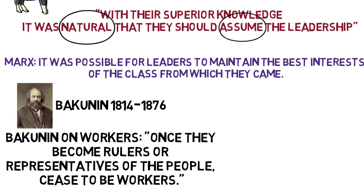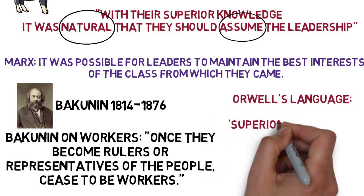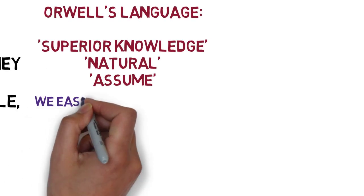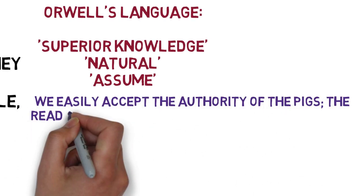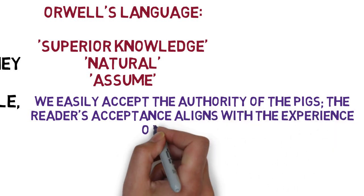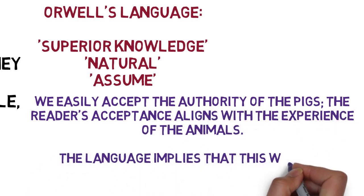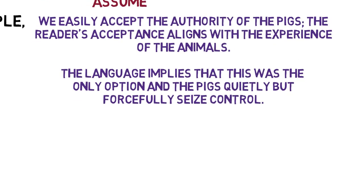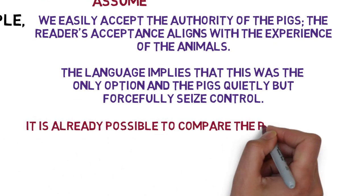The pigs are described as having superior knowledge and we're told it was natural that they should assume leadership. This is not the first time — in chapter two we were told that the teaching and organising of the others fell naturally to the pigs. In this language we easily accept the authority of the pigs. The reader's acceptance aligns with the experience of the other animals, and the language implies that having the pigs as leaders was the only option, that the pigs quietly but forcefully seized control. It's already possible at this point to compare the pigs with Jones.